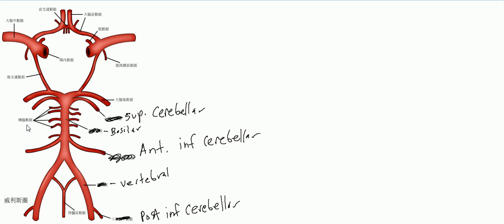Off of the basilar artery, once it's formed midline, there are tiny little branches called the pontine arteries. The pontine arteries go to your pons, which is part of your brainstem. Your brainstem's function is to keep you alive, so if you have a pontine infarct — a brainstem infarct — that is never good. Also coming off the vertebral arteries and forming one midline artery is the anterior spinal artery. We won't focus on it much since we're working our way up to the Circle of Willis.